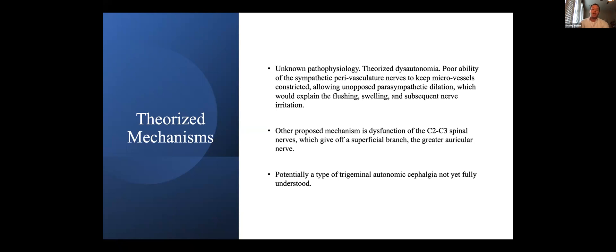Another proposed mechanism of dysfunction is C2-C3 spinal nerve dysfunction, which give off those two branches I talked about earlier, specifically the greater auricular nerve. And then another possibility is that it's potentially a type of trigeminal autonomic cephalalgia, not yet fully understood.